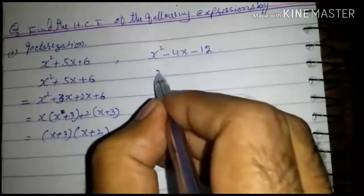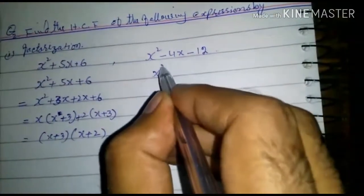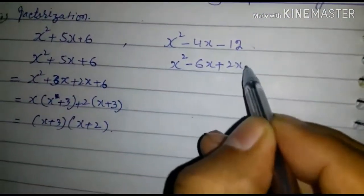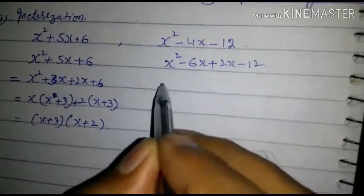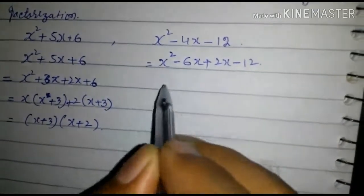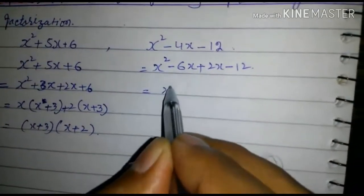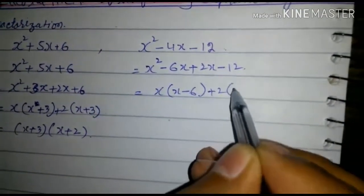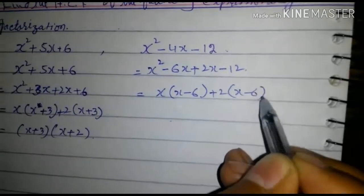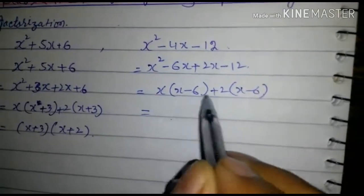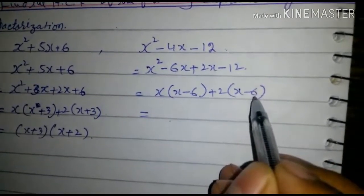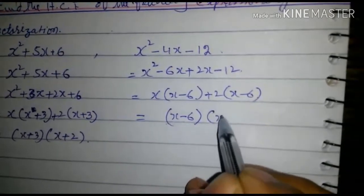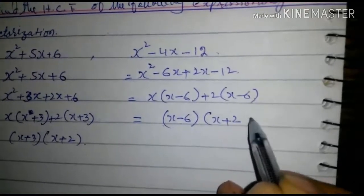Now consider the second expression. x squared minus 4x minus 12 equals x squared minus 6x plus 2x minus 12. Taking x common: x(x minus 6) plus 2(x minus 6). Since x minus 6 is common in both sides, this factors to (x minus 6)(x plus 2).